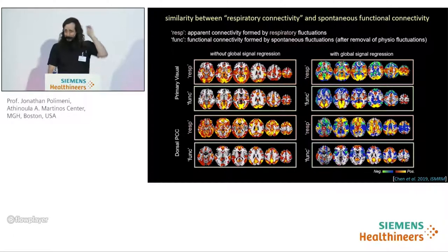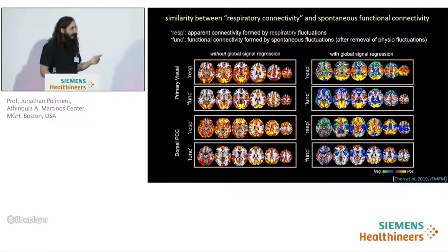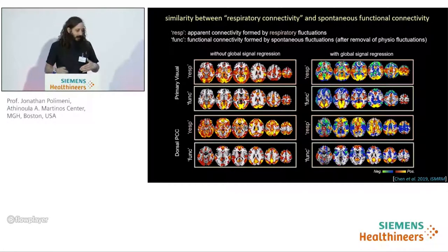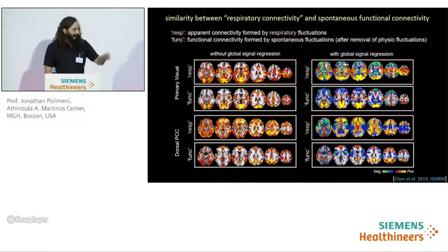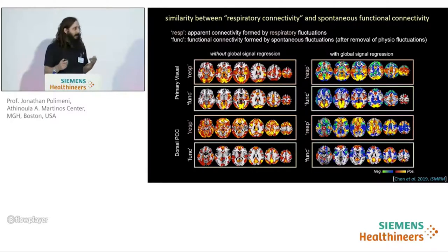What does this mean? The physiological networks seem to mimic neuronal networks. While this observation is robust, the interpretation is not yet very clear. It may be that we're seeing some relationship between regional vascular anatomy or physiology with the underlying cortical areas. Recent intriguing data from Molly Bright and Kevin Murphy further suggests that the vascular anatomy in some ways may reflect the underlying neuronal function — a cool hypothesis that I think is consistent with these results.